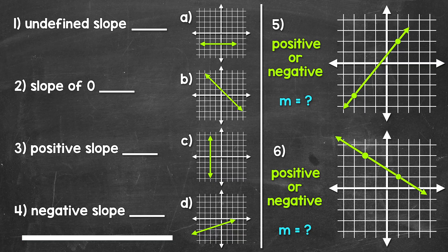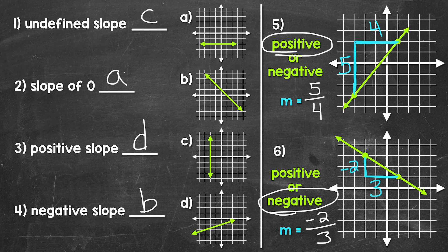Okay, so that was two minutes. Let's go over the answers. For number one, you should have C. For number two, A. For number three, D. And for number four, B. For number five, that is a positive slope, and the slope equals five over four — five fourths. Rise of five, run of four. And then lastly, for number six, that's a negative slope, and the slope is negative two over three — negative two thirds. Rise of negative two and run of three.